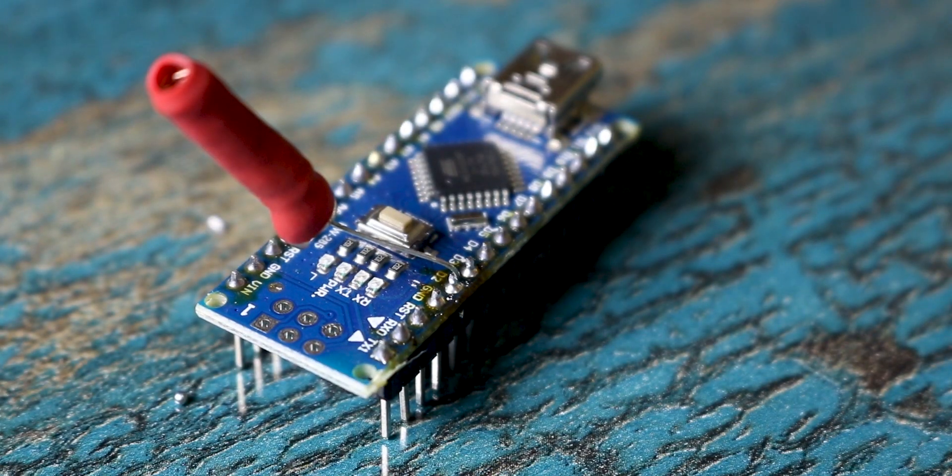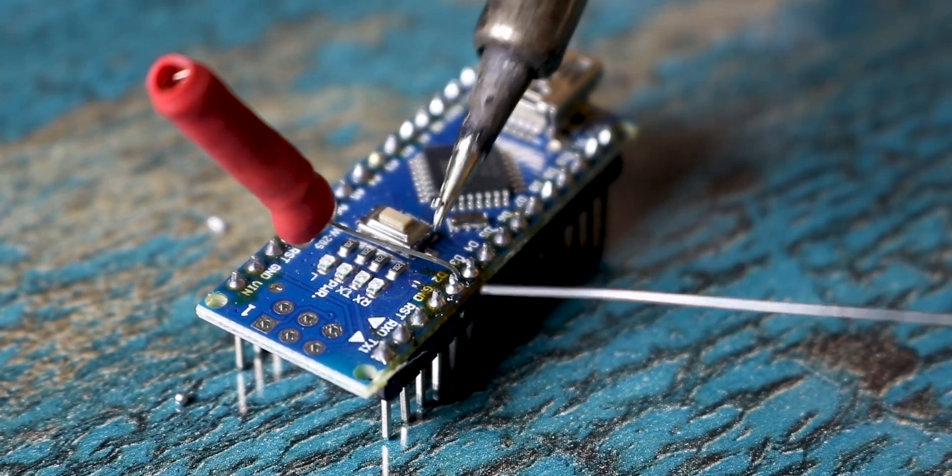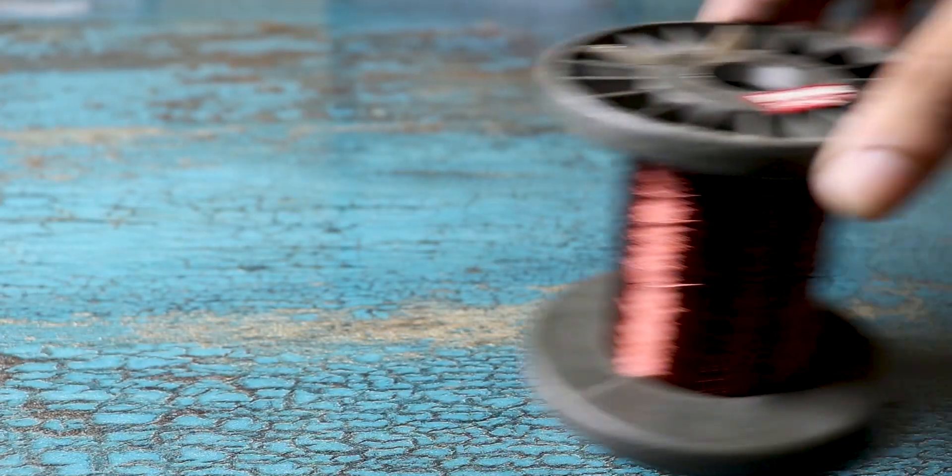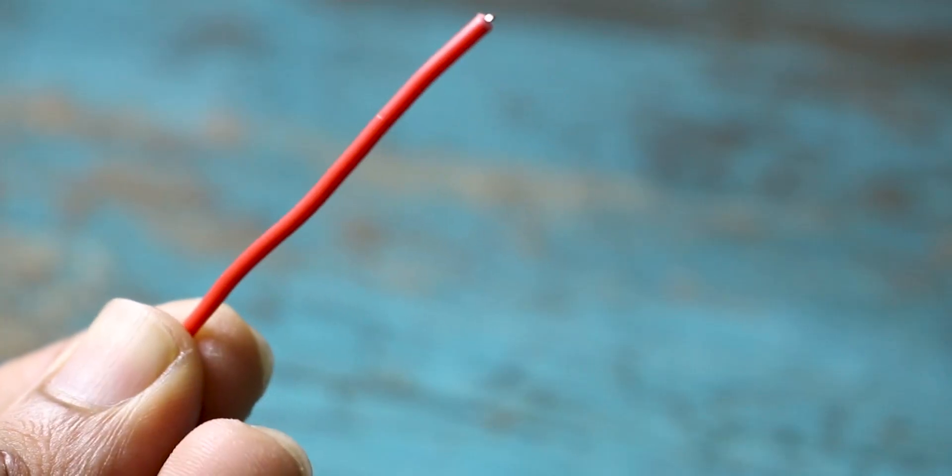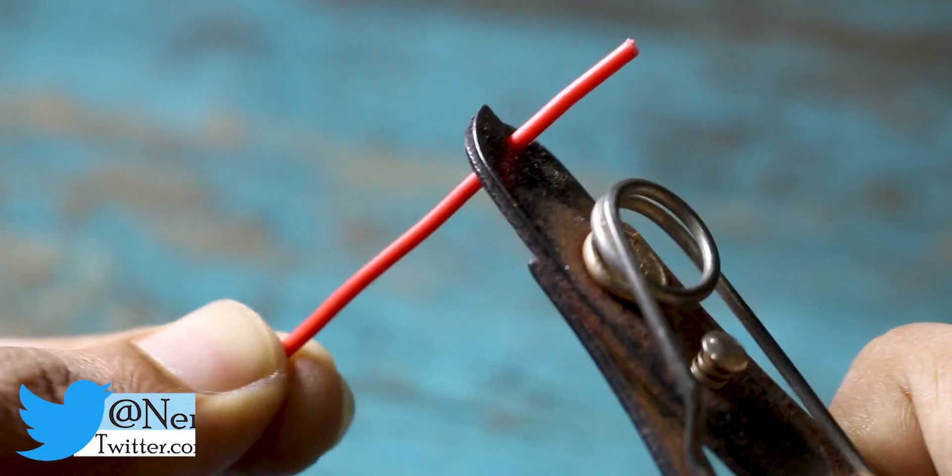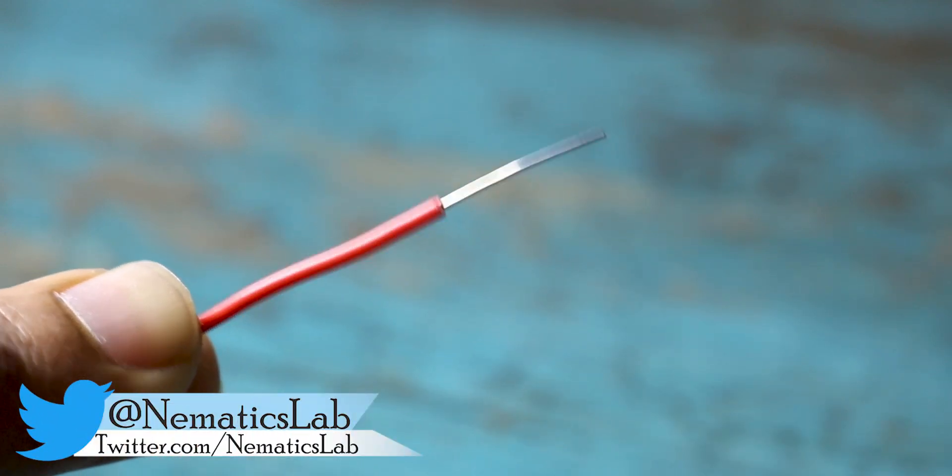Now that we know how our sensor works, let's see how to make one. To make one you need enameled copper wire of 26 gauge. If you don't have one you can even use single stranded wire. It will work. Just remove the coating.